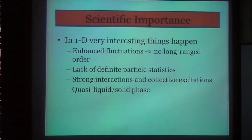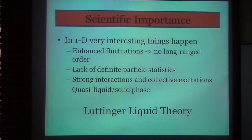And in one dimension, very interesting things start to happen. First you see enhanced fluctuations in the system. When I say fluctuations, I mean both thermal and quantum fluctuations. This disrupts the long-range order we talked about in the bulk case. Second, there's a lack of definite particle statistics in 1D. This means fermions and bosons start to look the same in one dimension. Essentially, particle exchange has the same effect on the wave function for both bosons and fermions. Additionally, there are strong interactions and collective excitations. In 1D, when you excite one particle, all the surrounding particles are necessarily excited as well. And you get to observe these quasi-liquid solid phases.